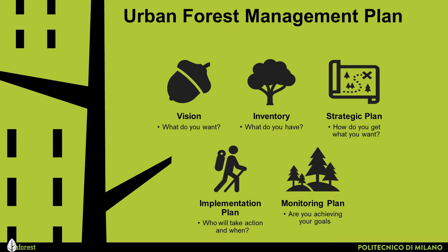In general, an effective urban forest management plan will include: a vision for the urban forest; inventories and assessments of the current status of the urban forest; a strategic plan with goals, objectives, and actions based on information, analysis, and identified needs; implementation plans with specific dates and assigned responsibilities; and a monitoring plan with a system or metrics to check effectiveness and revise the management plan as needed.